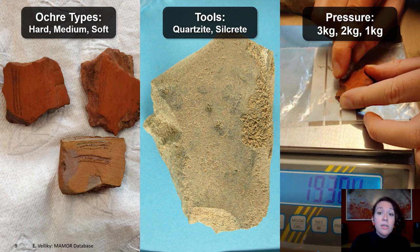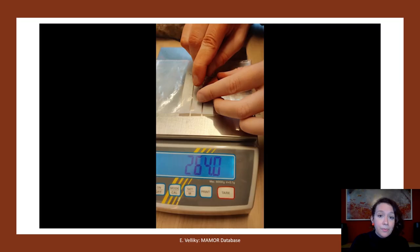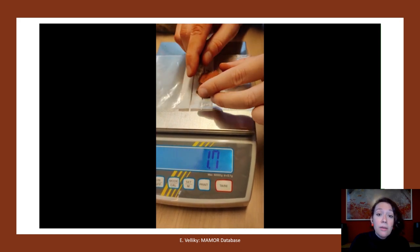First, we organized our materials for the early tests. We aimed to keep it simple — we wanted to test exclusively score marks or incisions made with a tool on ochre pieces. We took three types of ochre that I described as hard, medium, and soft. Next, we took common tool types that we find at Blombos Cave, specifically silcrete and quartzite. Lastly, we decided to use these tools to create incisions at three different levels of pressure: one, two, and three kilograms. We measured this by doing the incisions on a scale and recording the process.